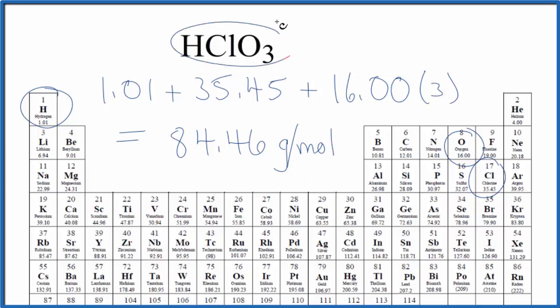That means if we have one mole of HClO3 it's gonna have a mass of 84.46 grams.